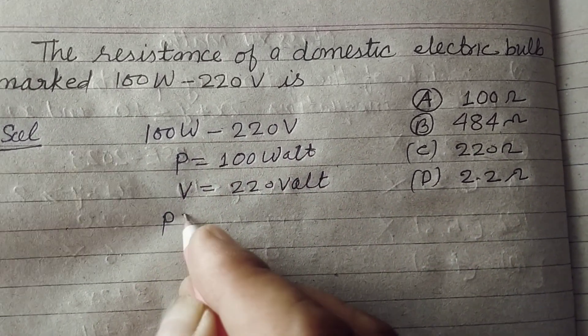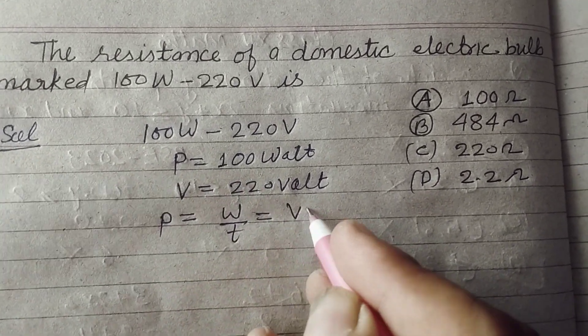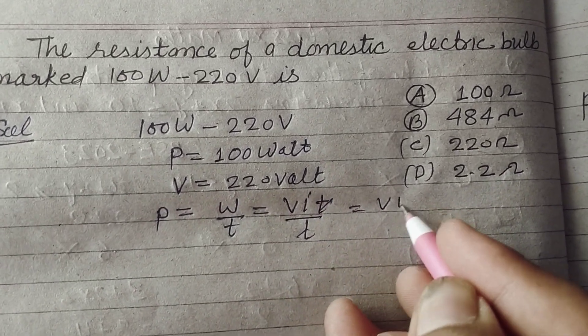And we know that P is equal to W upon T. And W is V I T upon T. So T T cancel, V I.